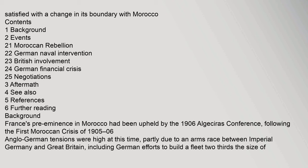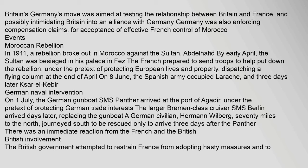France's pre-eminence in Morocco had been upheld by the 1906 Algeciras Conference. Following the First Moroccan Crisis of 1905–06, Anglo-German tensions were high, partly due to an arms race between Imperial Germany and Great Britain, including German efforts to build a fleet two-thirds the size of Britain's.